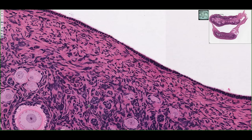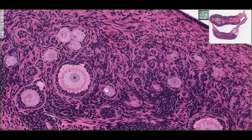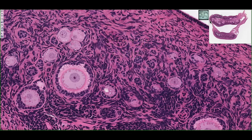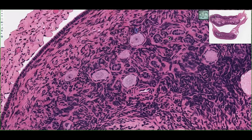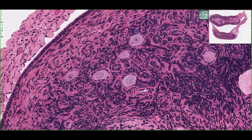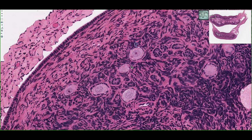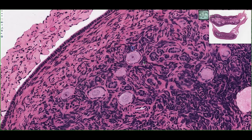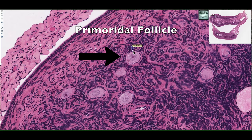If we go further deeper into the cortex, we'll see all these wavy cells that are found amongst the ovarian follicles. These are called stromal cells, and they essentially provide substance and support for the ovarian follicles. If we look at specific stages of follicular development, we can see this cell in the center of the field — this is called a primordial follicle.